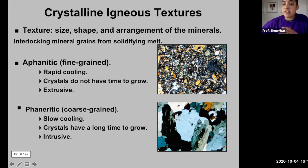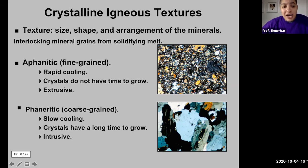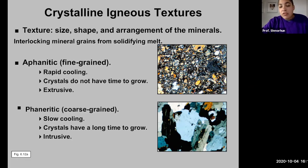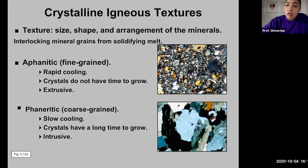The next texture is phaneritic, which is the opposite of aphanitic — phaneritic rocks are coarse-grained. The crystals are much larger and still interlocking. Phaneritic or coarse-grained textures indicate slower cooling compared to aphanitic. In hand sample, you can make out each individual mineral with the naked eye. The larger crystals indicate they had a longer time to grow, which means this igneous rock was likely formed in an intrusive environment, cooling from a magma melt at depth.